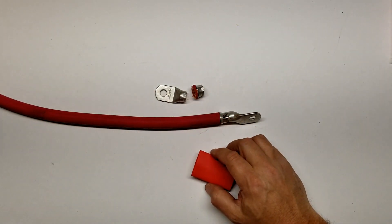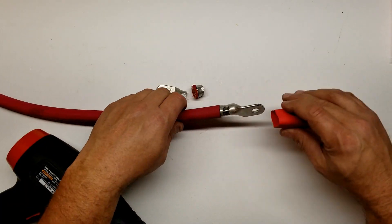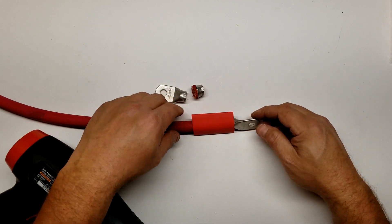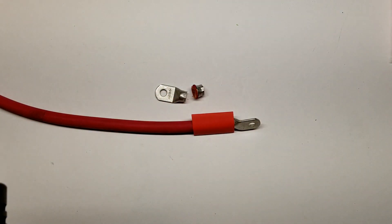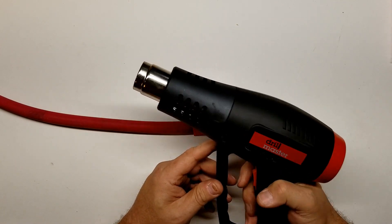For putting on heat shrink tubing you can use a flame, you can use a torch, whatever. I've just been using a heat gun because that way I don't accidentally melt my heat shrink tubing.